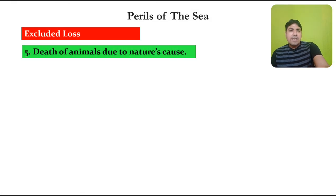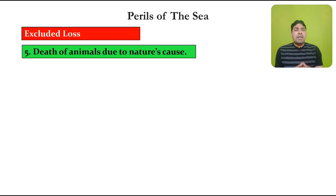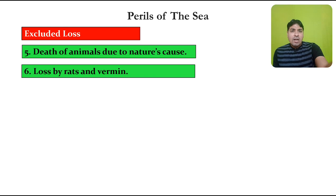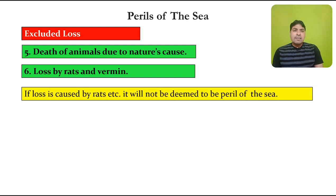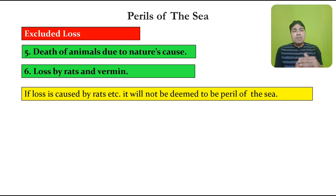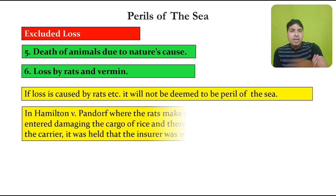Another excluded loss is death of animal due to a natural cause. If an animal dies due to a natural disease or natural cause, it will come under excluded loss and not under perils of the sea. Similarly, loss by rats — if a loss is caused by rats, it will not be deemed to be a peril of the sea. Generally, insurance companies do not provide cover for loss caused by rats, though an insurance company may optionally choose to do so.